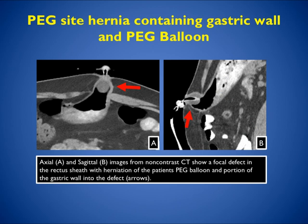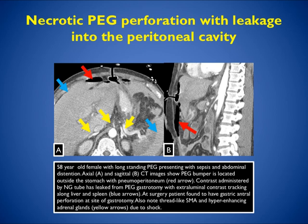Here's an example of a PEG site hernia containing gastric wall and the PEG balloon, in a patient who has had the PEG in for a long time — it has simply worn its way out anteriorly. In another case, the patient has perforation with leakage into the peritoneal cavity, areas of necrosis, and infection. Note how bright the adrenals are and how small the celiac and SMA appear, indicating the patient is hypotensive. At surgery, the patient was found to have gastric antral perforation at the gastrostomy site.